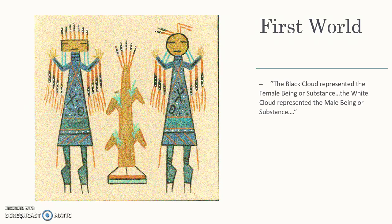In referencing the text, one of the things we see in the first world that helps us understand the Navajo people's identity is this quote: 'The black cloud represented the female being or substance; the white cloud represented the male being or substance.' What we see here is that Navajo people are actually created from and of the earth — created from the clouds. As they morph through those four worlds eventually into the fifth world, they become different beings but are originally formed from the earth.